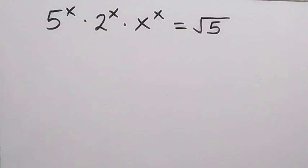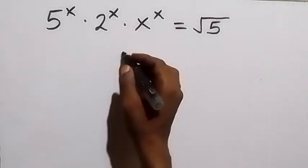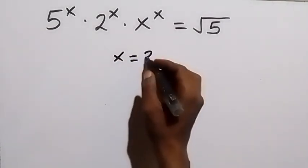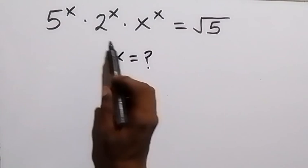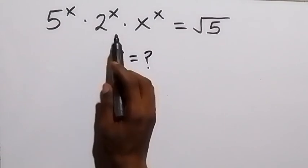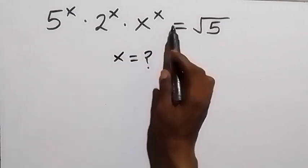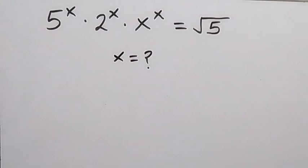Hello, you are welcome. How to find the value of x in this problem. From here we have 5 raised to power x, times 2 raised to power x, times x raised to power x, equals to root 5.